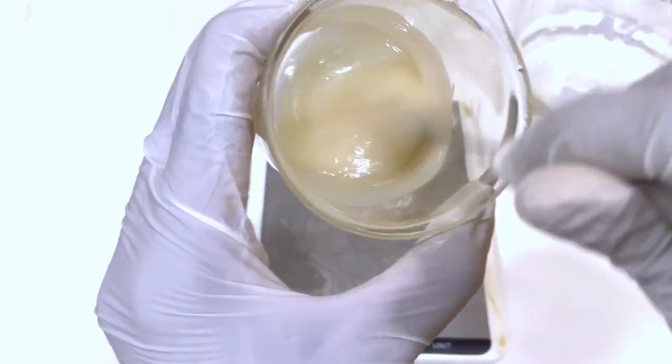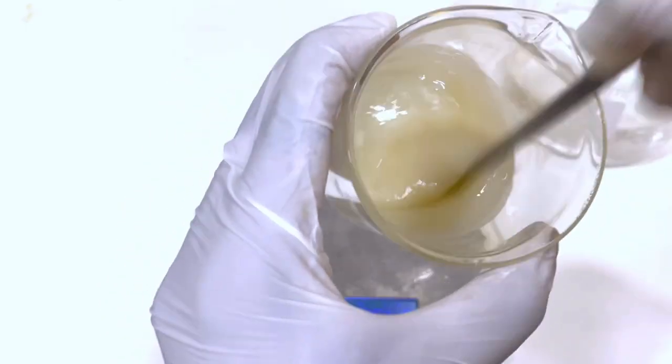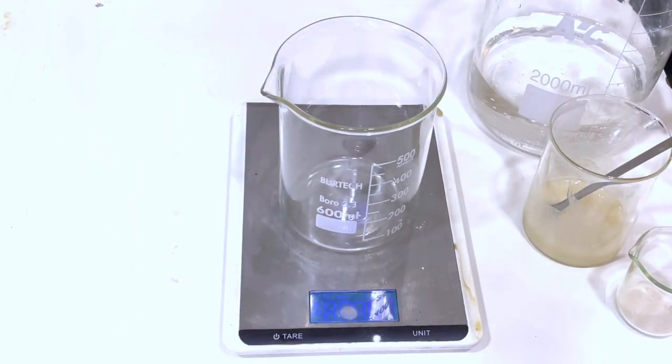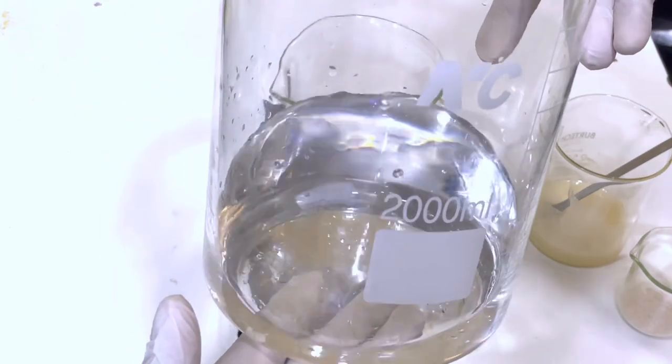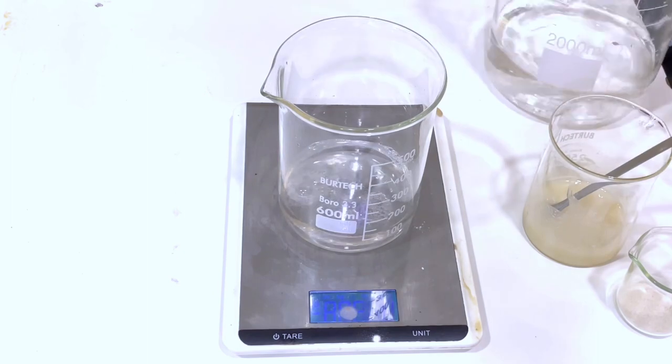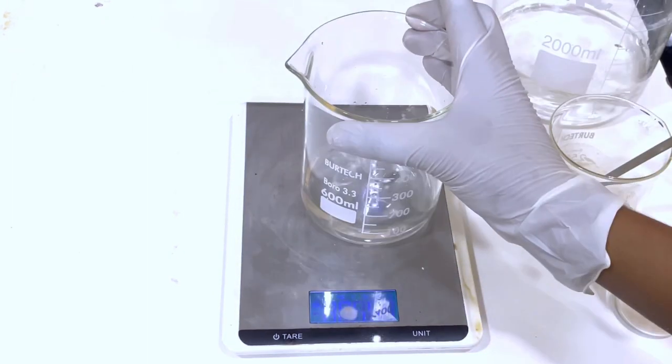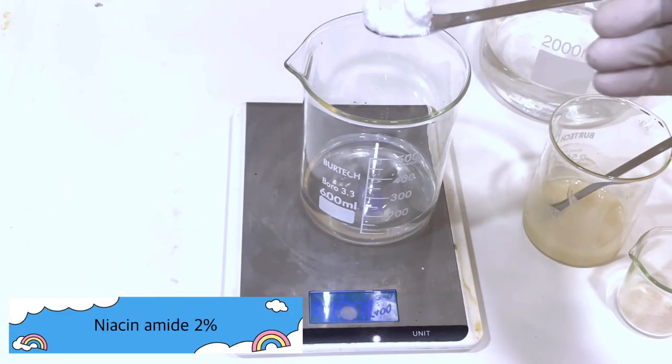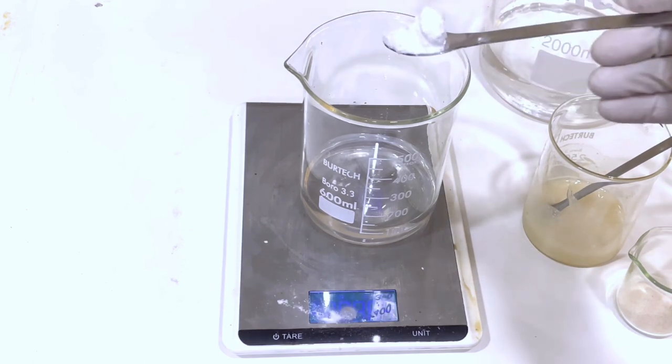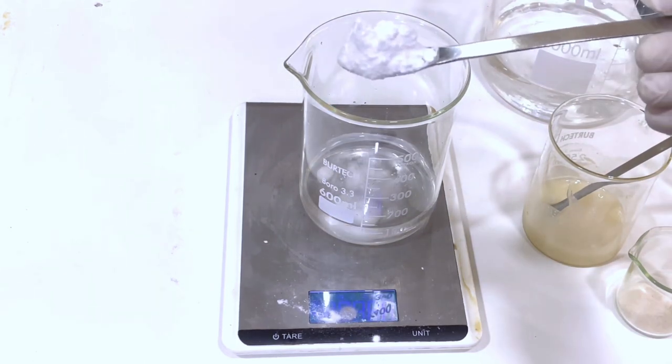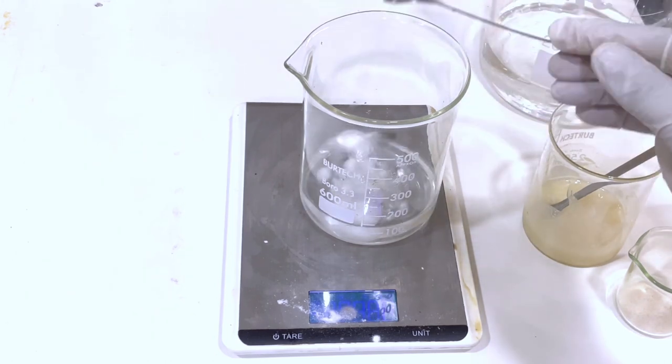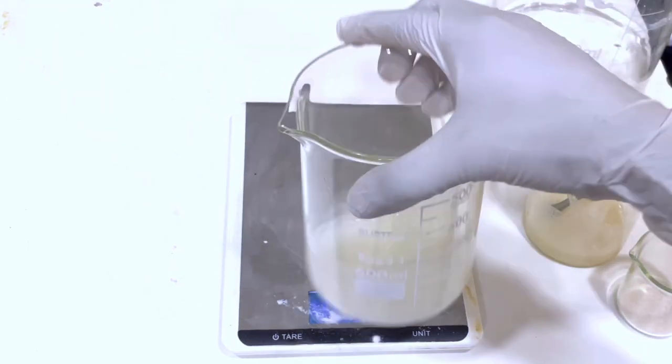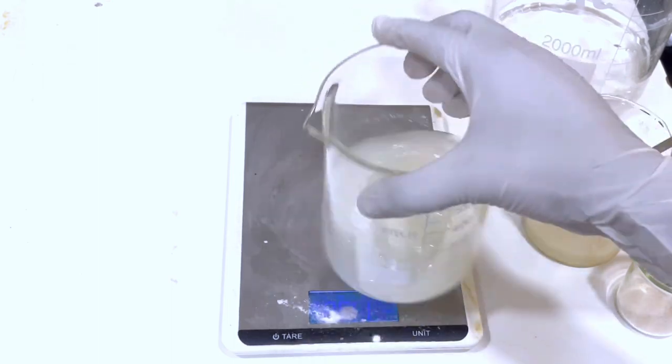Next we are going to take another beaker and get some of the water from our water phase to dissolve our niacinamide. Niacinamide is a very good skincare ingredient, a multi-purpose ingredient. It helps to build keratin, which is a protein that maintains your skin's health, and it is also known to make your skin stronger, smoother, and brighter. So we're adding it here for those benefits.